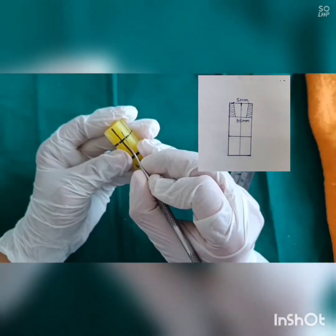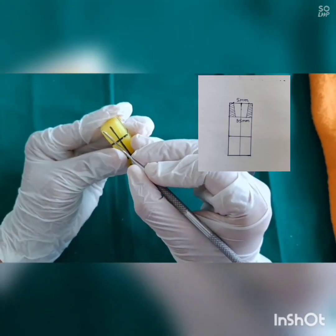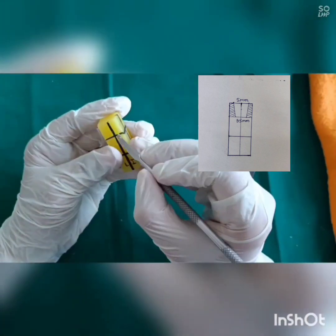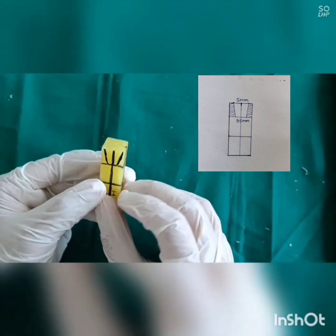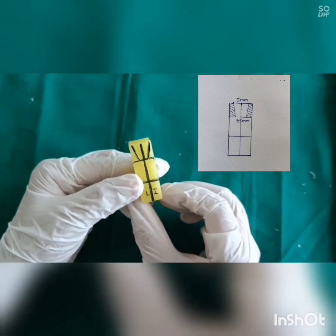For mesiodistal diameter of crown and cervix, we have to take 3.5 mm at cervix and 5 mm at contact area on both labial and lingual sides. Draw the line to get a trapezoid shape on both labial and lingual sides.